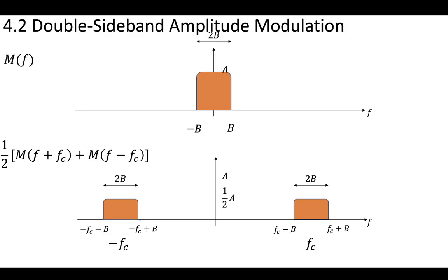This also means that you could write these two frequencies as minus fc plus B, minus fc minus B, and so on. And so this is a visualization of what happens when you modulate the message, comparing the original message in the frequency domain to the modulated message in the frequency domain.